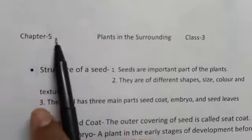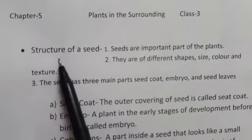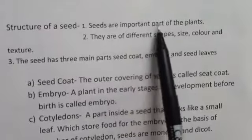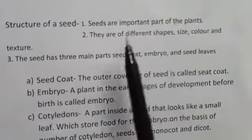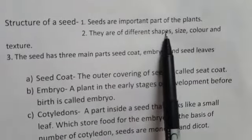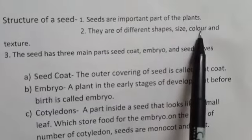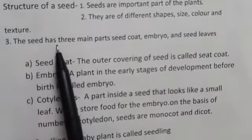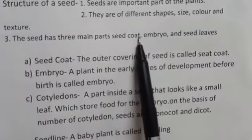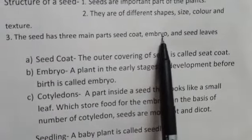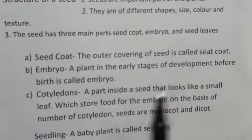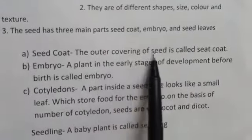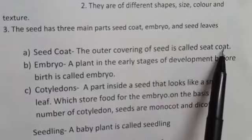Plants in the Surrounding, Chapter 5 — Structure of a Seed. Seeds are important parts of plants. They are of different shapes, sizes, colors, and textures. A seed has three main parts: seed coat, embryo, and seed leaves.